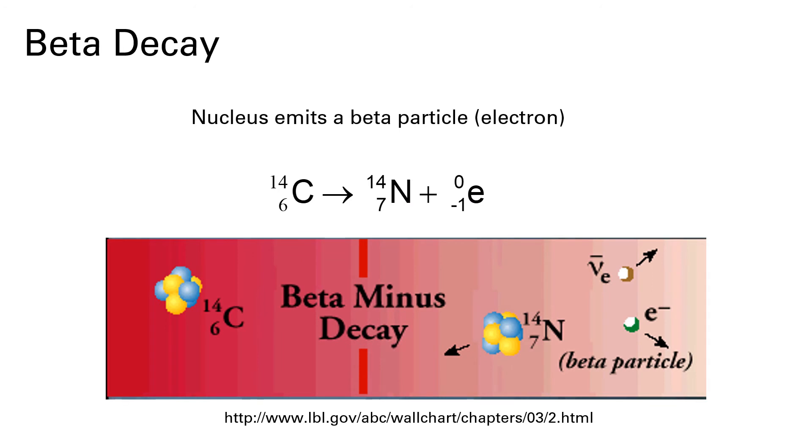Beta decay happens when a nucleus emits a beta particle or an electron. And so over here on the product side, we're seeing that zero minus one E. And something kind of interesting happens here. In terms of this carbon 14 nucleus, one of the neutrons that's in that nucleus actually turns into a proton plus an electron. And so you'll notice that the number of protons increases by one. It goes from six to seven. And the total mass number 14 remains the same. And so in beta decay, a neutron turns into a proton plus an electron. There's also a lot of energy given off in this process.